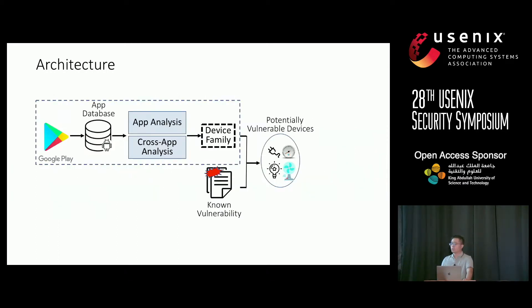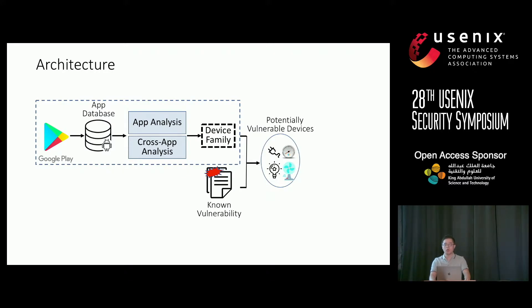Here is the architecture of our platform. First, we have a crawler to collect mobile companion apps from Google Play. Second, we do app analysis to extract device information from the apps. With that information, we do cross-app analysis, which puts two devices in the same device family if they share a component. Once we gather the device families, we use known vulnerability reports to find potentially vulnerable devices.